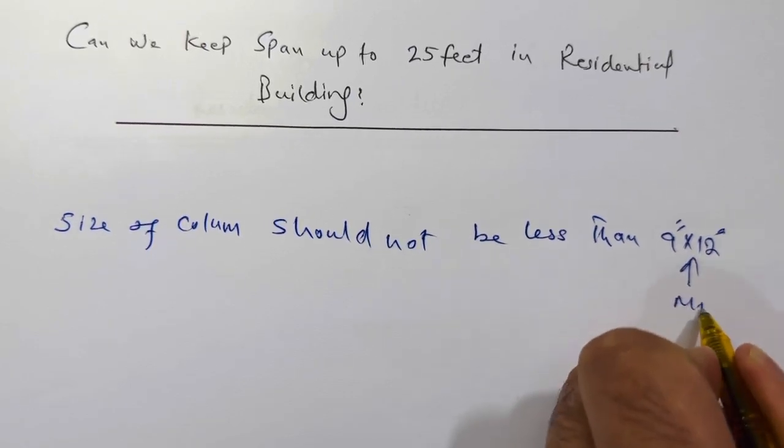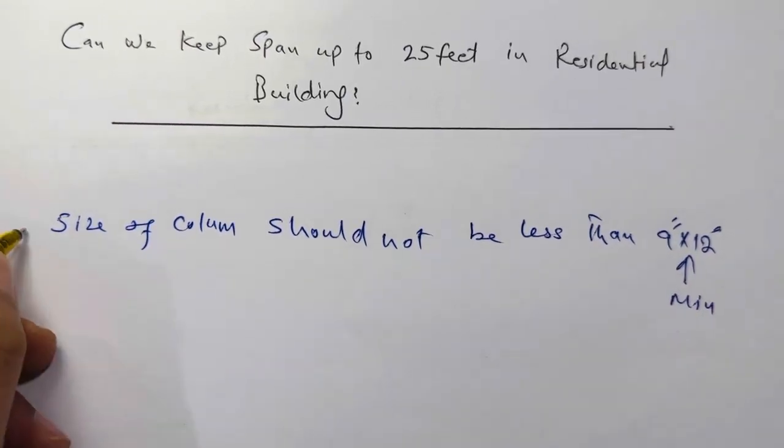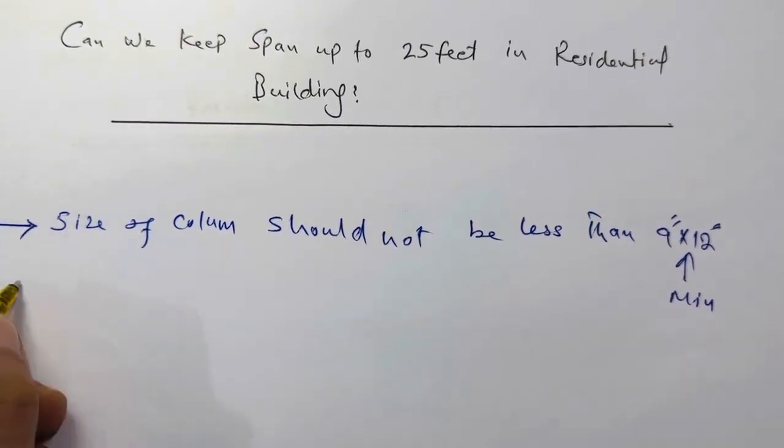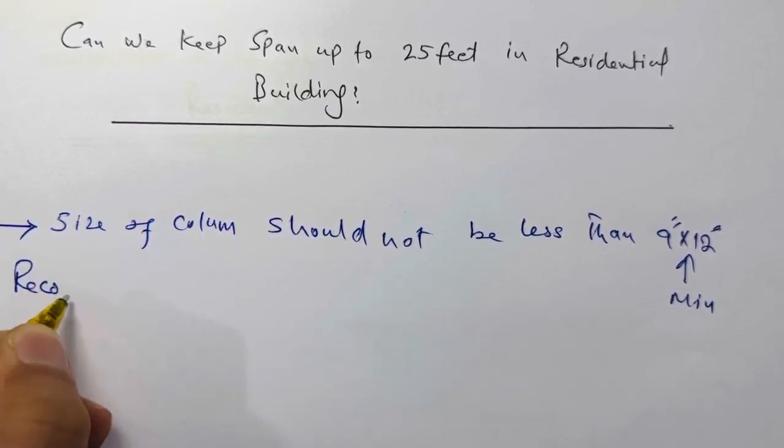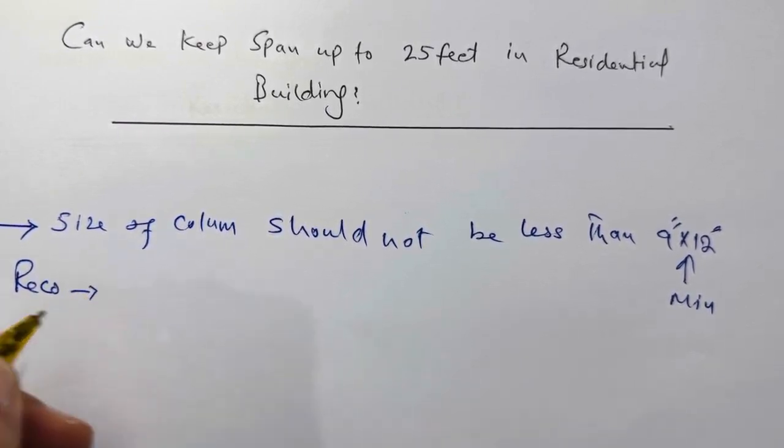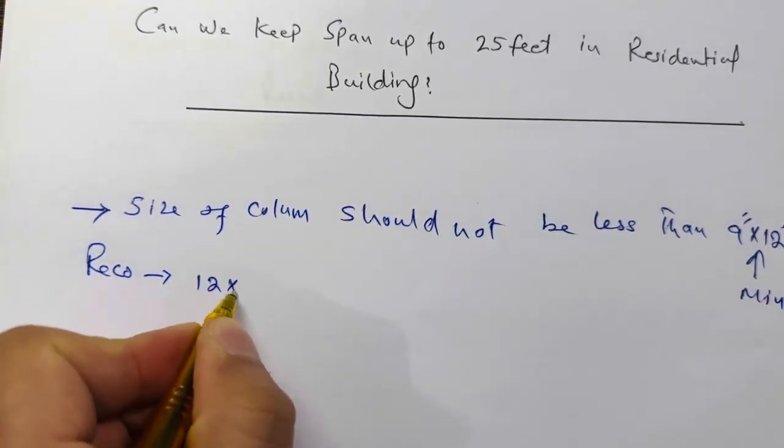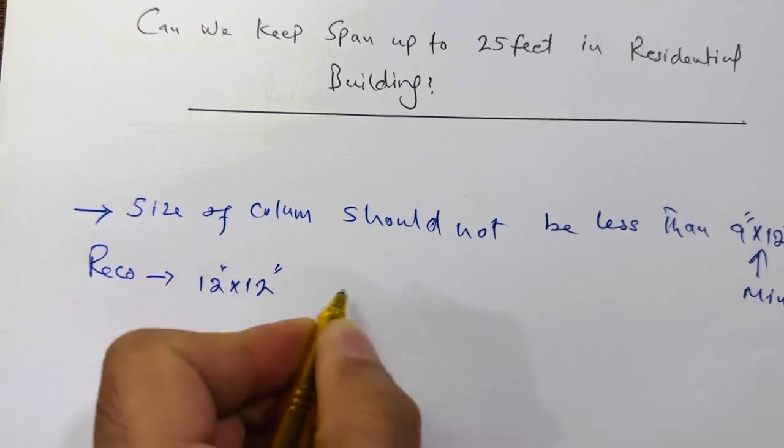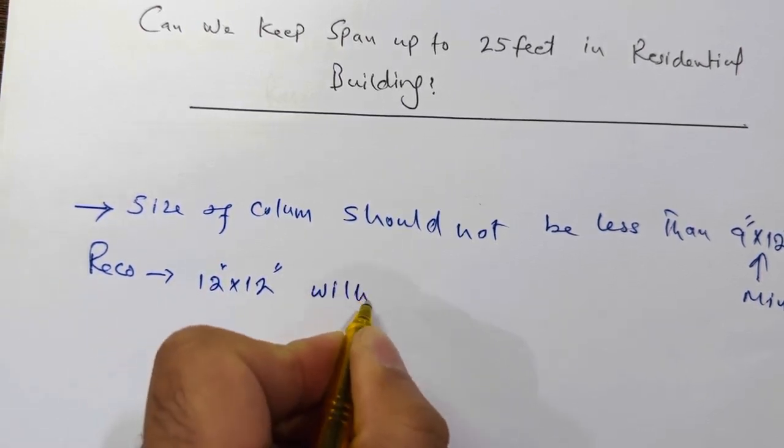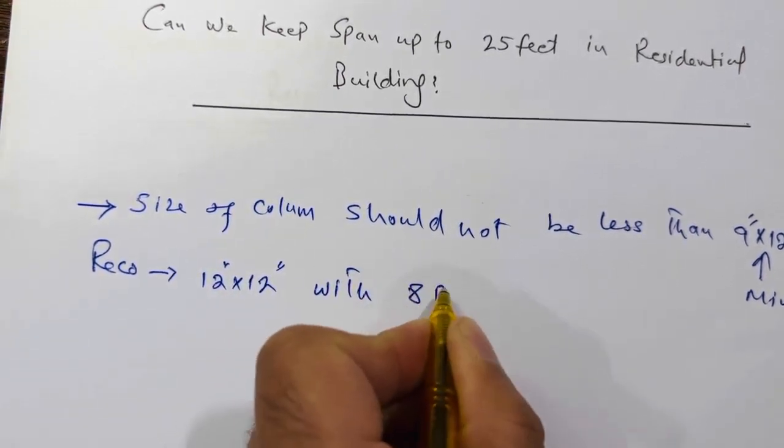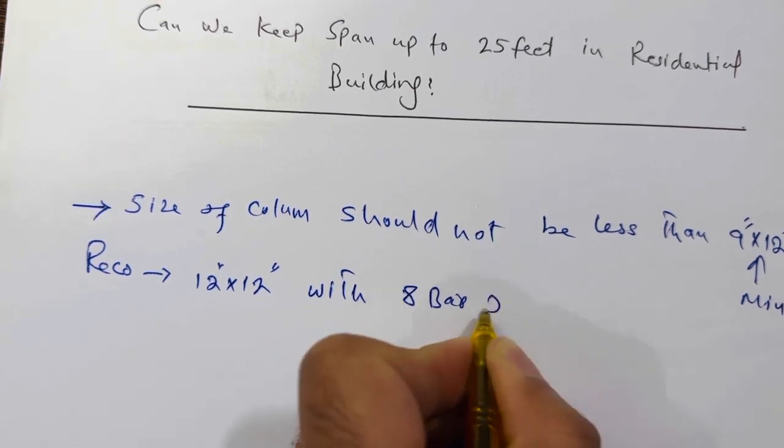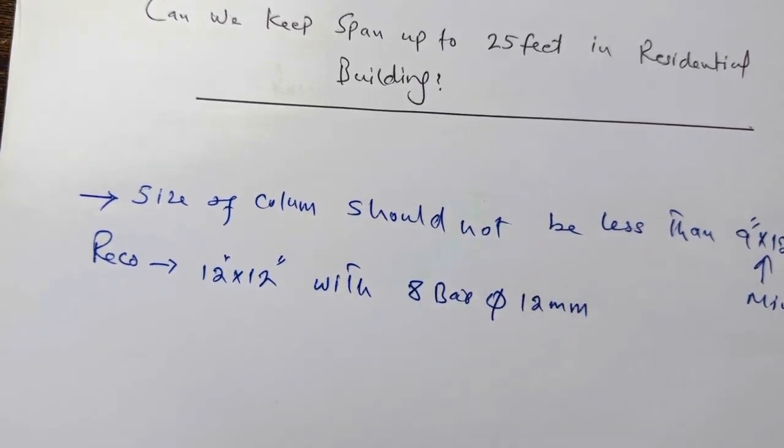This is minimum size, but I am recommending you the size of column. This is my recommendation: use the size or keep the size of the column 12 by 12 inches with eight bars and the diameter should not be less than 12 millimeter.